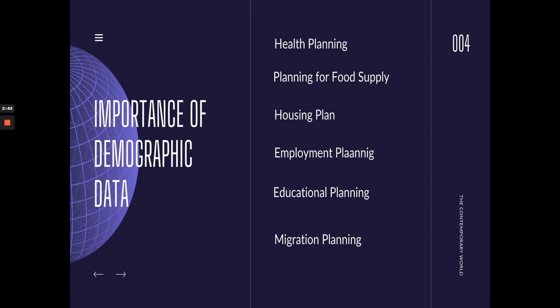The importance of demographic data is for governance. Demographic data is used for health planning, planning for food supply, housing planning, employment planning, educational planning, migration planning, and more. For health planning, for example, during this pandemic we need to know who are most likely to be affected by COVID-19 — who the vulnerable people are. We also need to know how many hospitals to build to accommodate the number of people in a city or municipality.